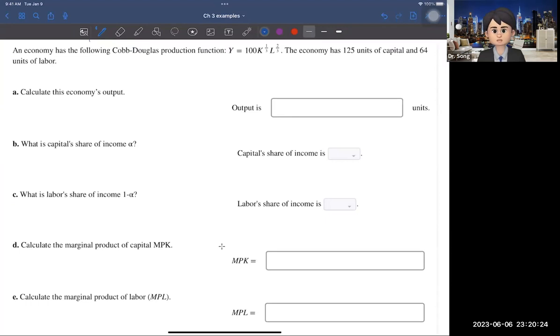And then, the economy has 125 units of capital. So, K equals 125. And then, the labor, we have 64 workers. And then, the question asks you to calculate the economy's output.